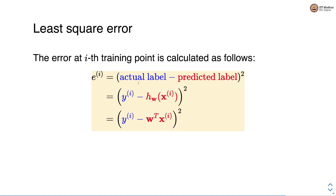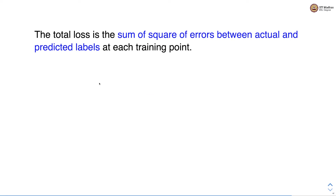Y superscript i is the actual label and W transpose X superscript i gives us the predicted label. We subtract the predicted label from the actual label and square the difference to get the error at the i-th training point. The total loss is the sum of squared errors between the actual and predicted labels at each training point.